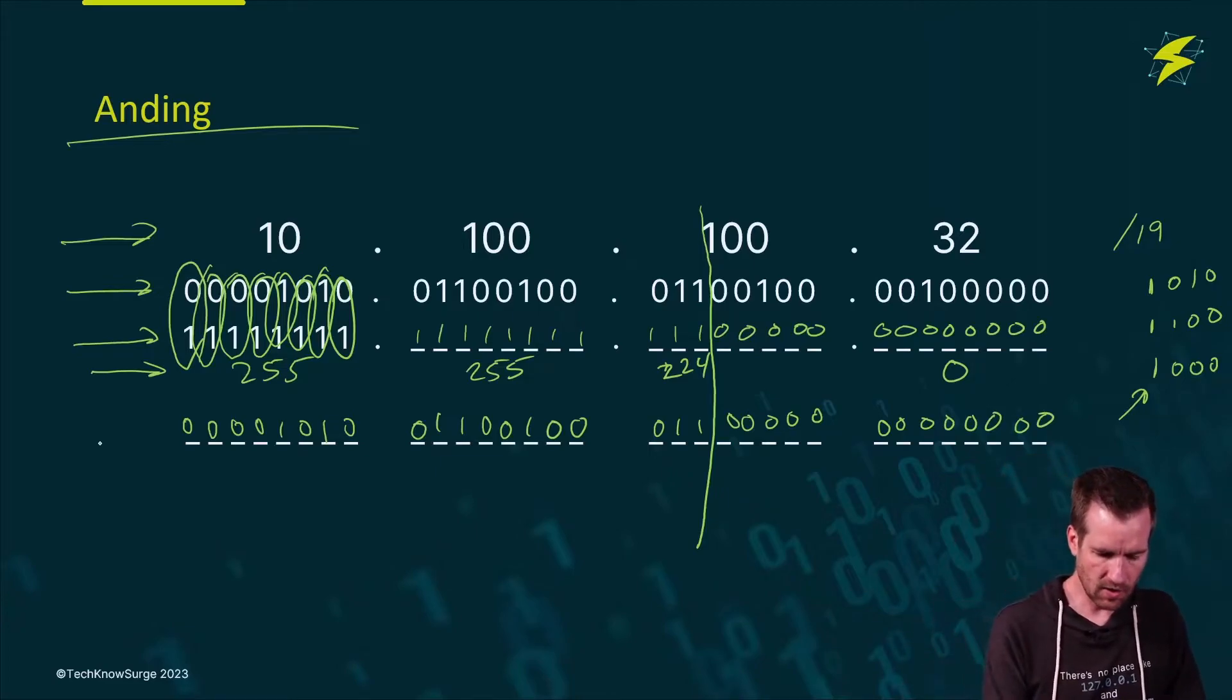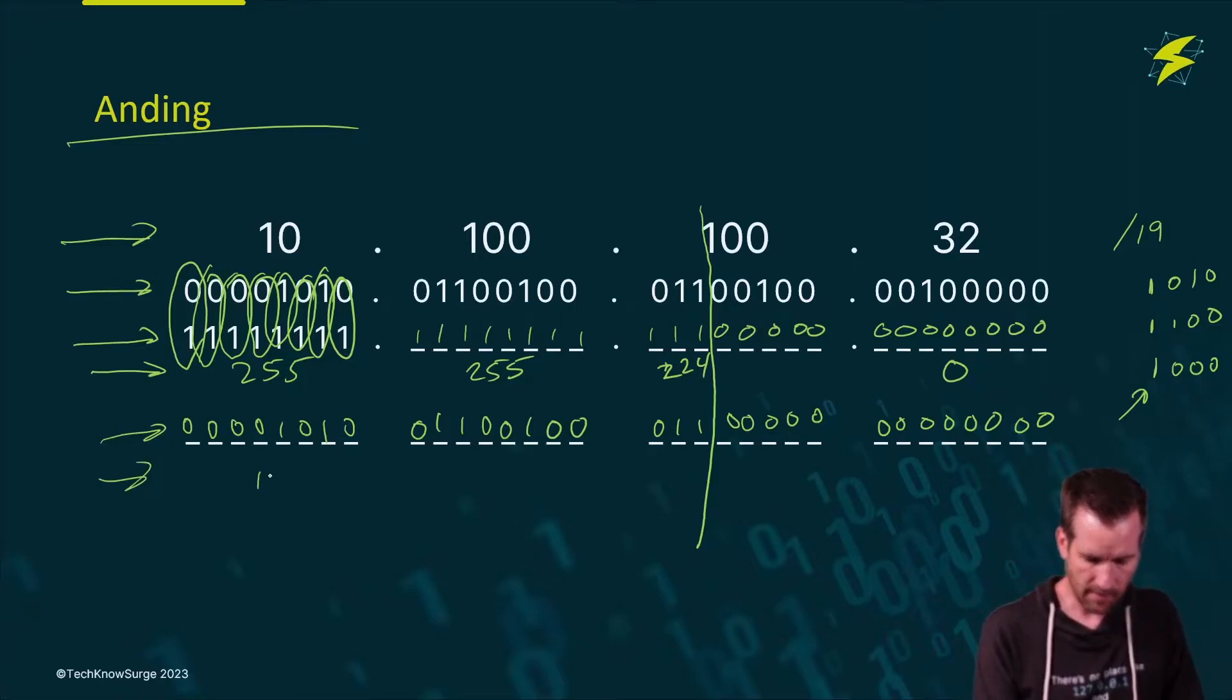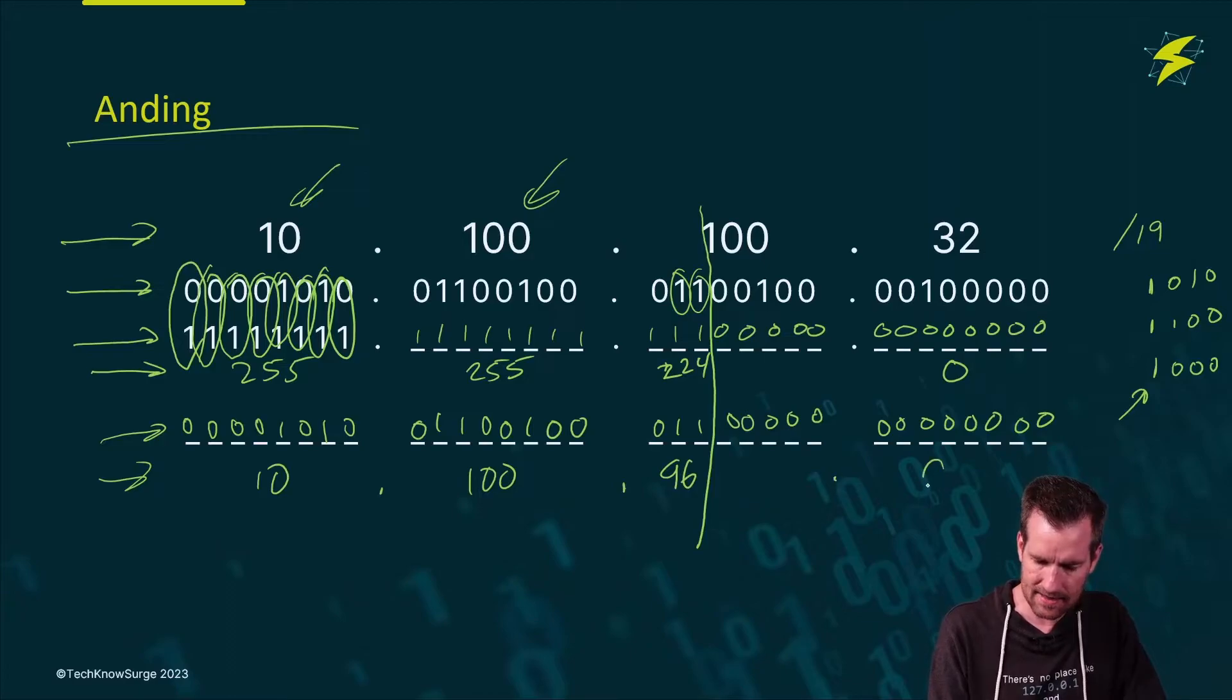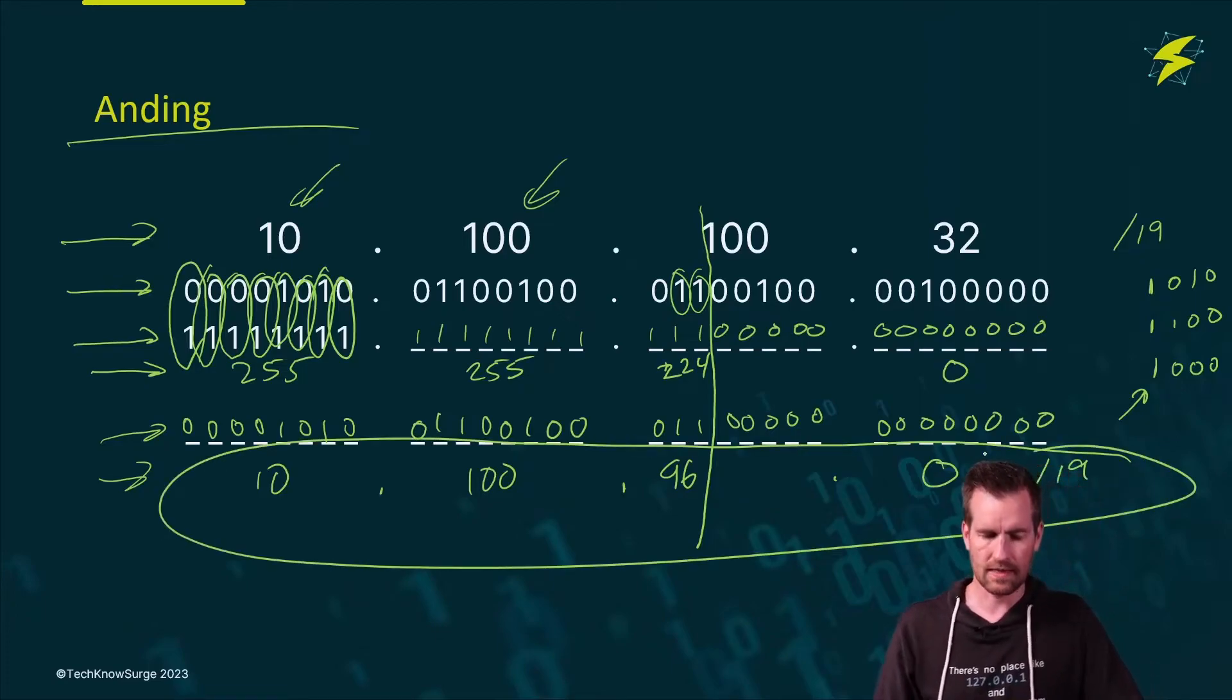So now I calculate this. I turn this binary number into a decimal again. We've got 10 dot 100. That makes sense because these are all network bits, so it's going to line up. And then this right here, we've got a 64 plus 32, so we're going to get a 96. So 10.100.96.0 slash 19. That is our network address right there. So that's how you come up with the anding process.